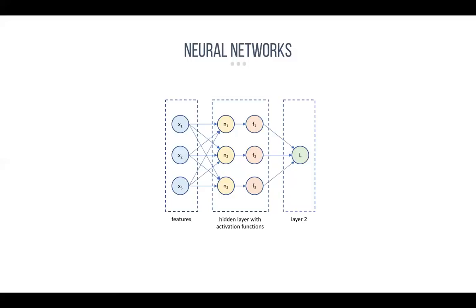Basically every circle in this diagram is a linear regressor that does a very simple linear mathematical operation on the input data and produces output data. On the inputs, we usually provide a floating point number between zero and one, and the output is again a number between zero and one. It's just a bunch of nodes doing linear algebra on input data. Then at the end, we consolidate the data into a single output node. This could be a neural network that predicts, say, the temperature in Barcelona — the output would be a floating point number, and the inputs could be weather patterns or the Earth's position relative to the sun.